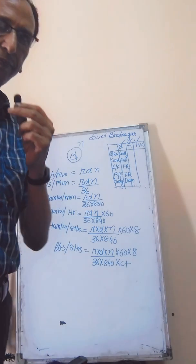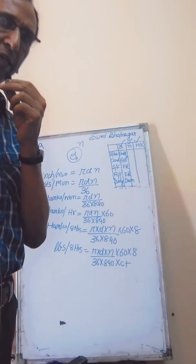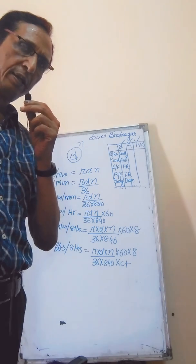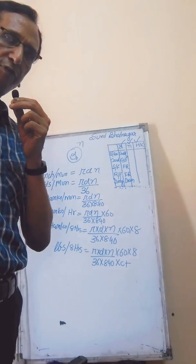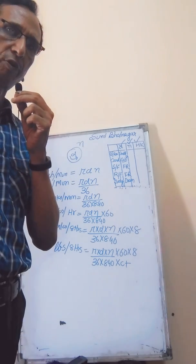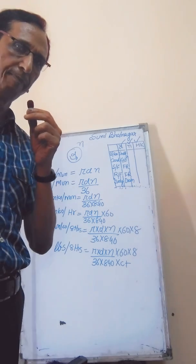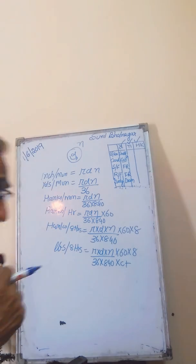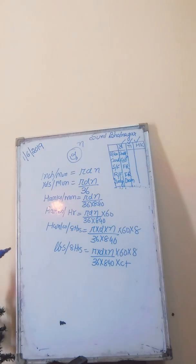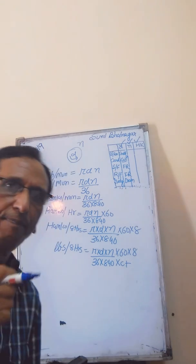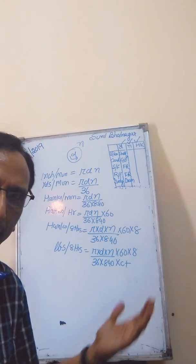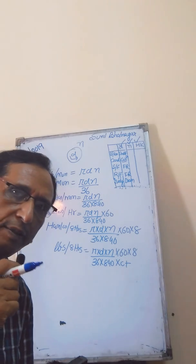Here the count is the yarn count if I am calculating for the drawing frame, the roving count in case I am calculating the production of the roving frame, the draw frame sliver count if I am calculating draw frame production, or it may be card sliver count if I am taking the card production.